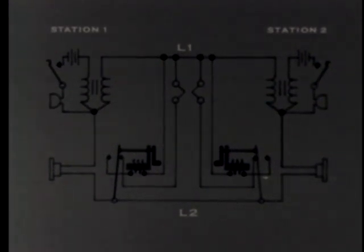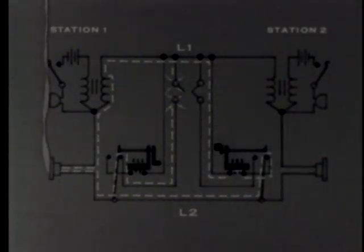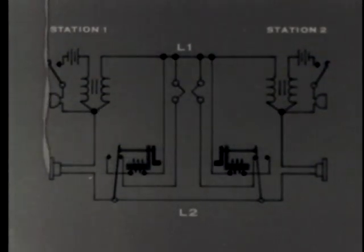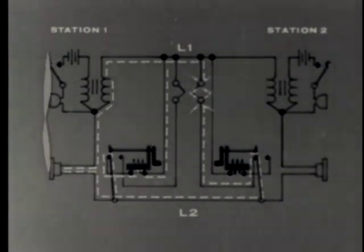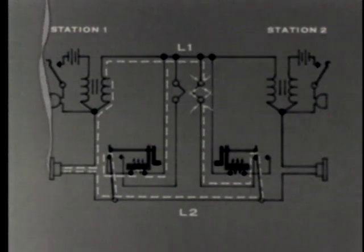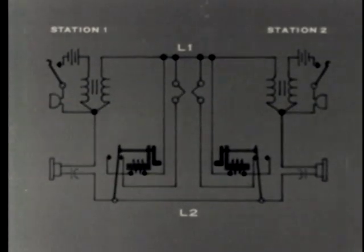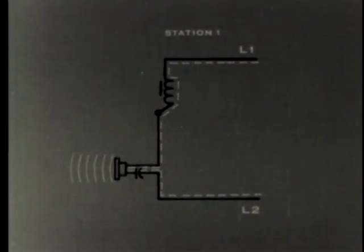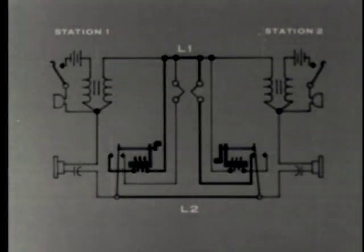But there is something missing in this circuit. Because when station two rings station one, the current in our receiver circuit overloads the receiver. The same thing occurs when station one signals station two. To correct this, we must make use of our sixth basic component, a capacitor. Certain capacitors impede low-frequency ringing currents that could enter the receiver circuit, yet pass high-frequency voice currents. Our local battery system is ready for traffic in either direction.